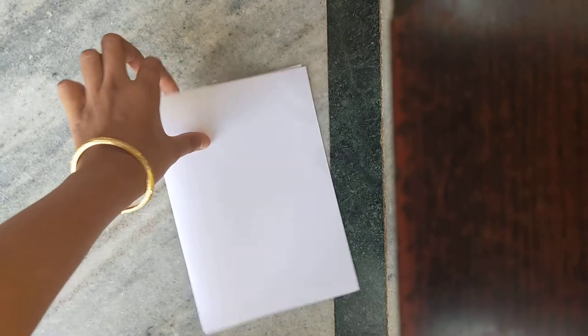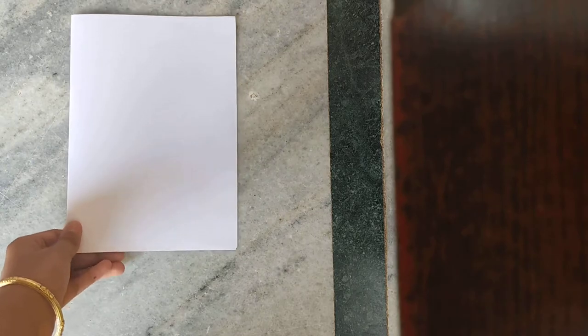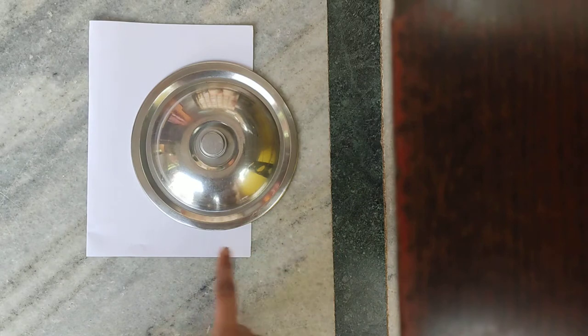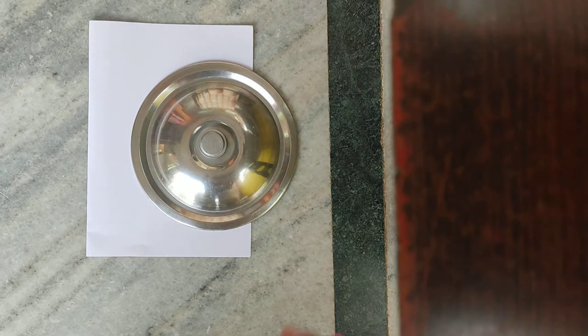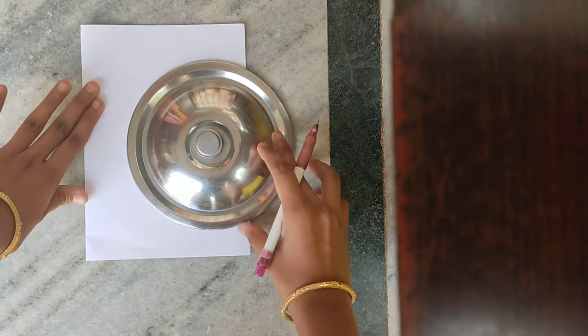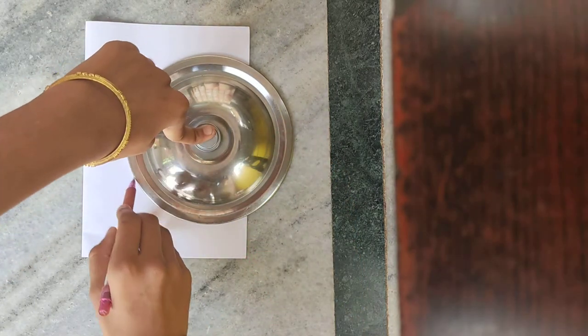First, take the foam sheet and fold it into half. Then take any lid of any container and keep it here. Take a pen or pencil and just draw the outer line.